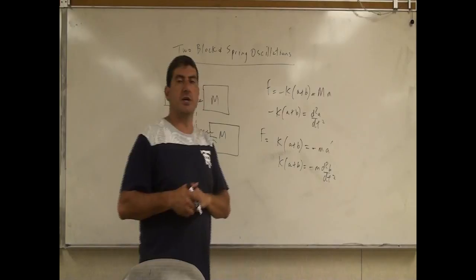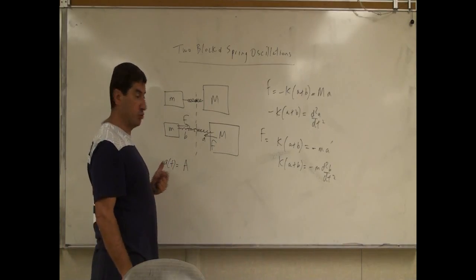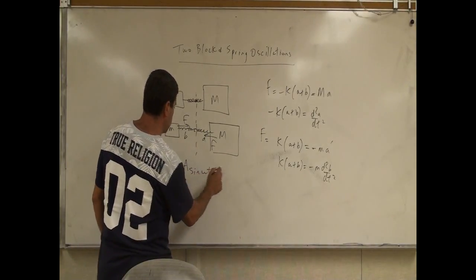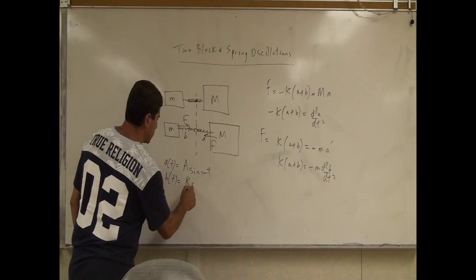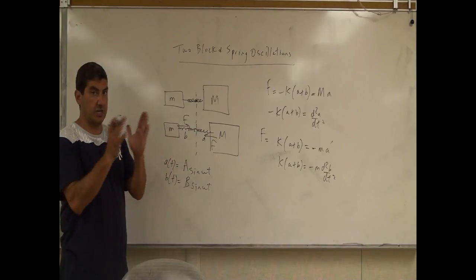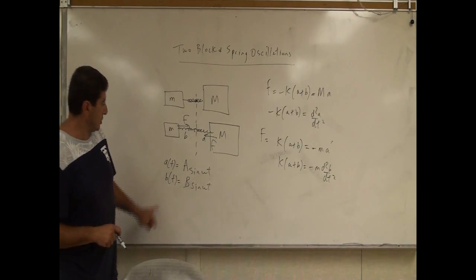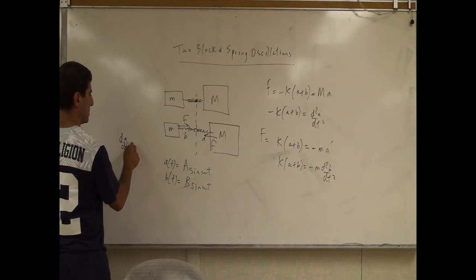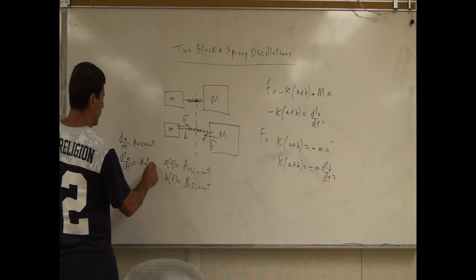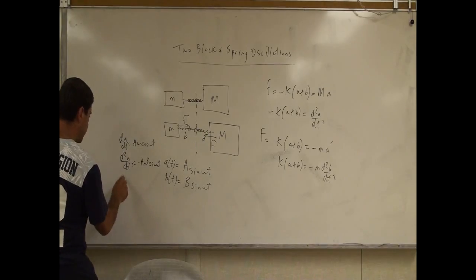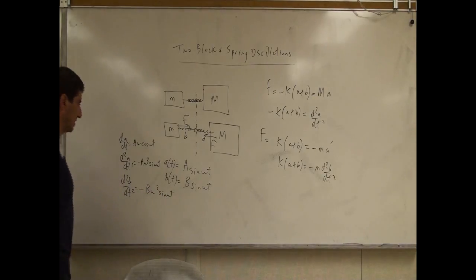So what would be the general solution? A of T we're going to say is the amplitude — the maximum amplitude of block M — times sine of omega T, and we're trying to calculate the omega. Then the position of little m is B of T equals B sine of omega T. They're going to oscillate with the same frequency; their omega is the same. The only thing that will be different is their total amplitude, the maximum amplitude A and B. Taking the second derivative: the first derivative of A with respect to T is A·ω cosine(ωt), and the second derivative is negative A·ω² sine(ωt). Similarly, the second derivative of B with respect to T is negative B·ω² sine(ωt).